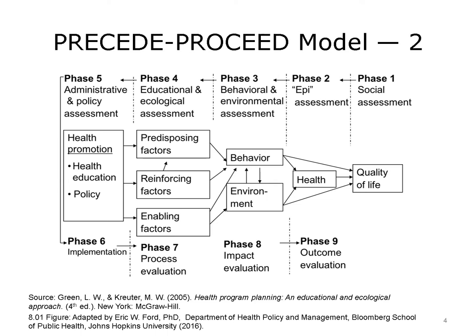Phase 5 is the administrative and policy assessment. This is where we ask whether our organization — whether they be governments, health systems, insurance companies, or other organizations in the community — are ready to engage in a new program or innovation. Here it is good to bring in both business and policy experts. Business people are necessary to determine if the program is adequately funded, administratively supported, and sustainable.